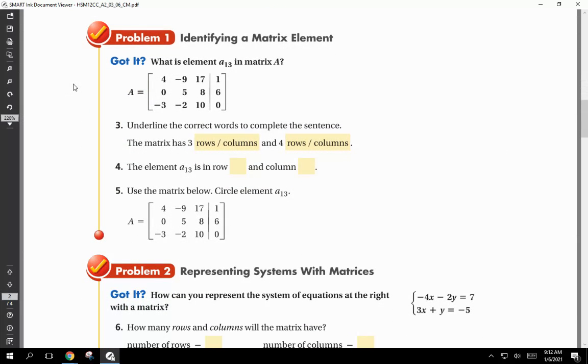Next page, we're flying through this today. Identifying a matrix element. Problem number 1. Got it. What is element A13 in matrix A? So we're trying to figure out what that is. Let's figure out how to do this. Underline the correct words to complete the sentence. The matrix has 3 rows. I'm supposed to underline them. And 4 columns.